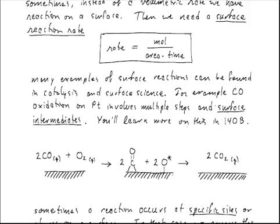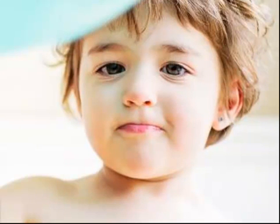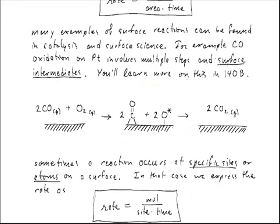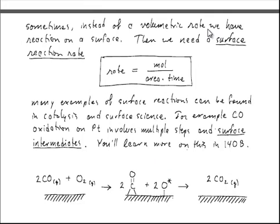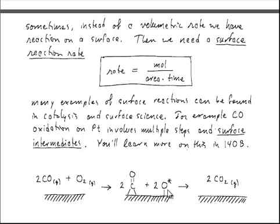There are also cases where we don't have a reaction occurring in the volumetric bulk. Instead, we might have a reaction happening on a surface. In those cases, we express the reaction rate as the number of moles being produced per area per time. There are many examples of these in catalysis and in surface science — for example, CO oxidation on platinum, which involves multiple steps and multiple surface intermediates. Two gas phase species come down and attach to the surface in a process called adsorption.